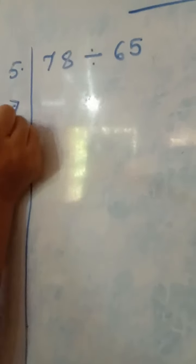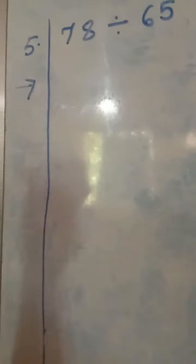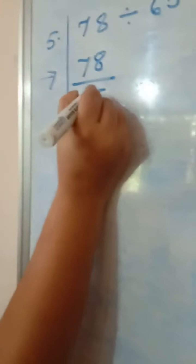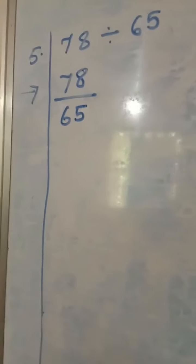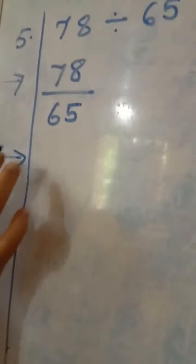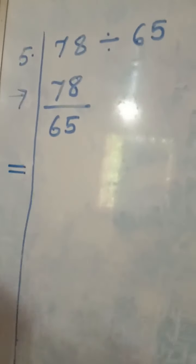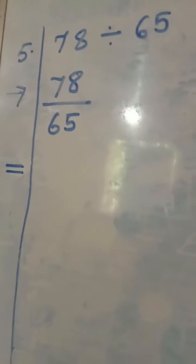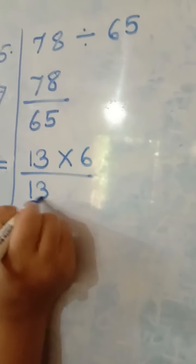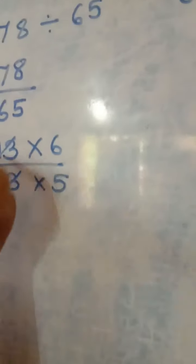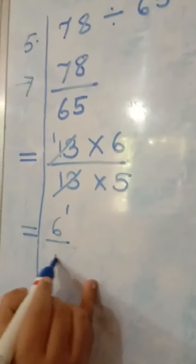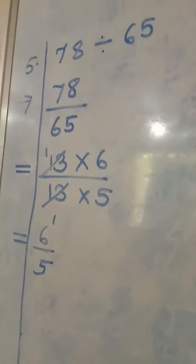Now the fifth sum: 78 divided by 65. Write it in fraction form: 78 upon 65. Both numbers are positive, so there is no issue with signs. Which table do both numbers appear in? They are in the 13's table: 13 sixes are 78 and 13 fives are 65. So 13 cancels with 13. The answer is 6 upon 5.